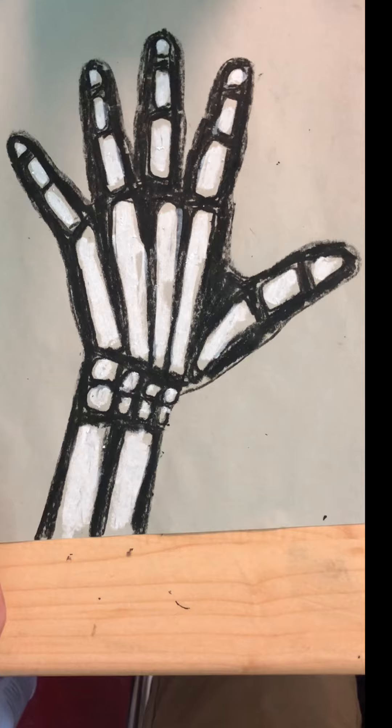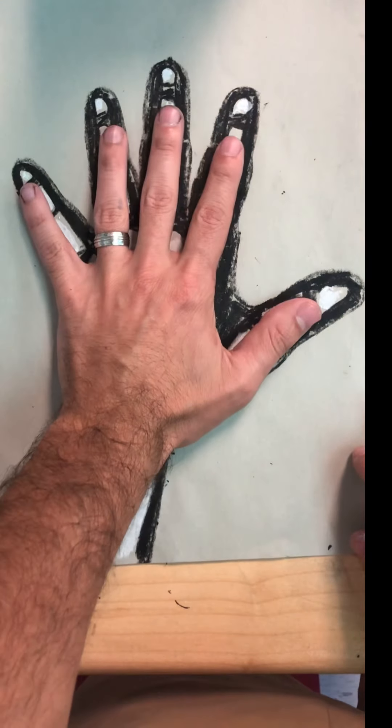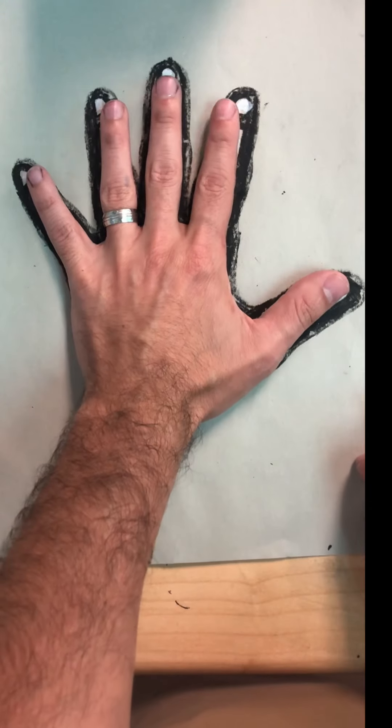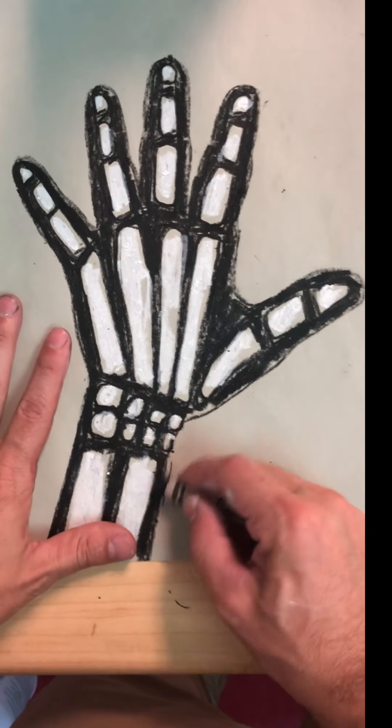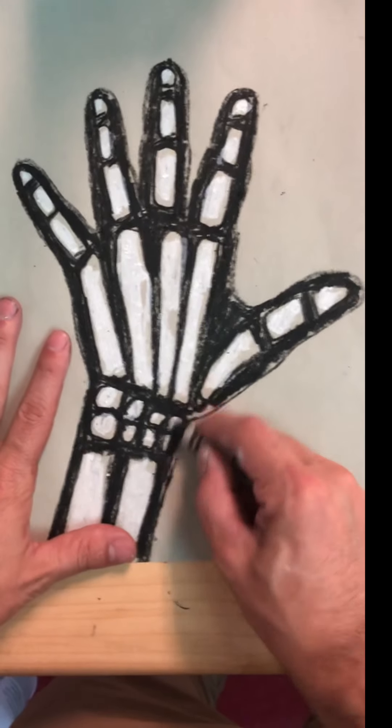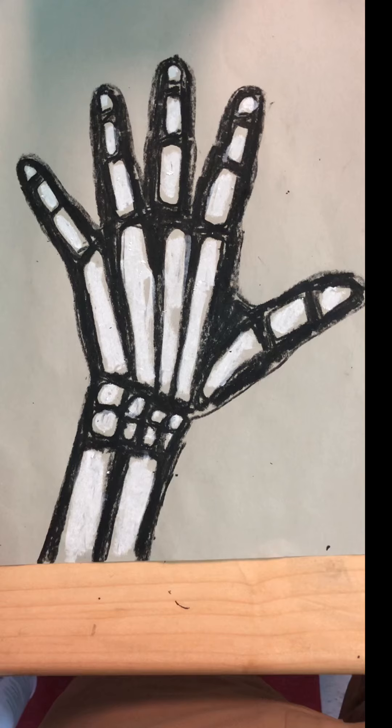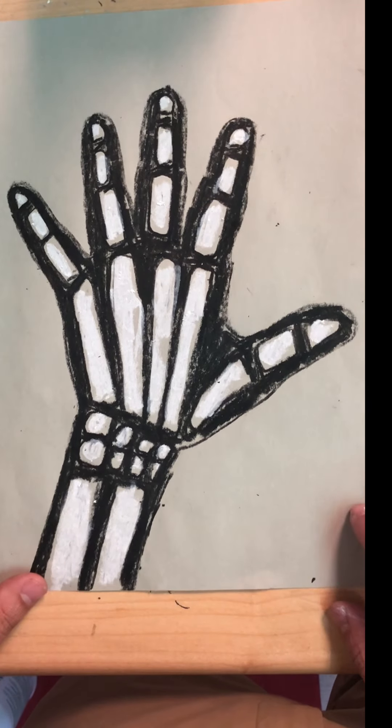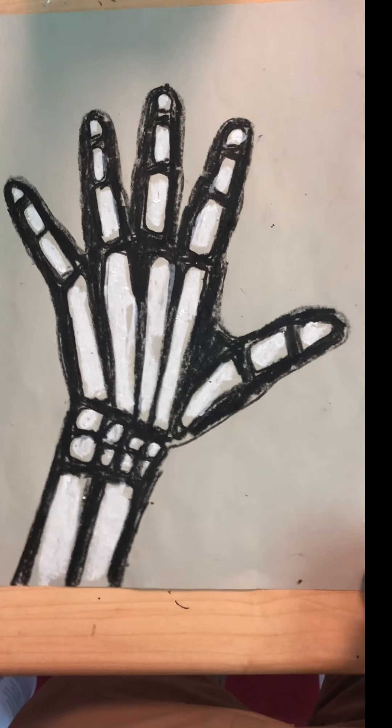And there you have it. Boys and girls, you're done. Look at your awesome picture. You've learned not only today how to draw a skeleton hand, you've also learned some of the science behind bones. Why your body has them and how many bones are in your hand. I hope you enjoyed the lesson. Please make sure you clean up your area when you are finished. Put your name on your paper and take it home today.